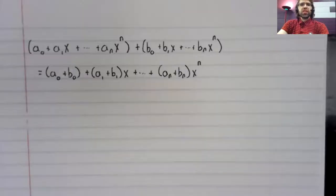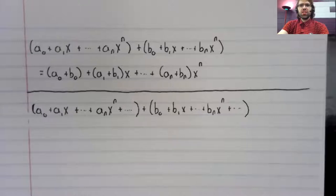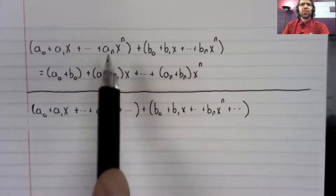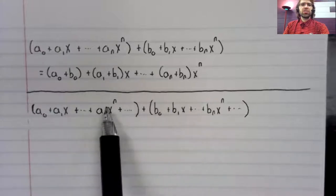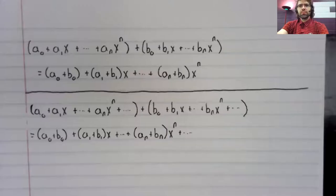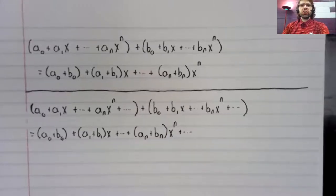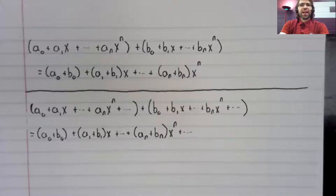Now, suppose instead of two finite polynomials, you have two power series. We can add power series similarly to how we add polynomials. That is to say, component-wise. Now, we do have a restriction here. If we're going to add two things together, both the things we're adding have to be defined. In other words, we can only do this addition when both of these power series converge.